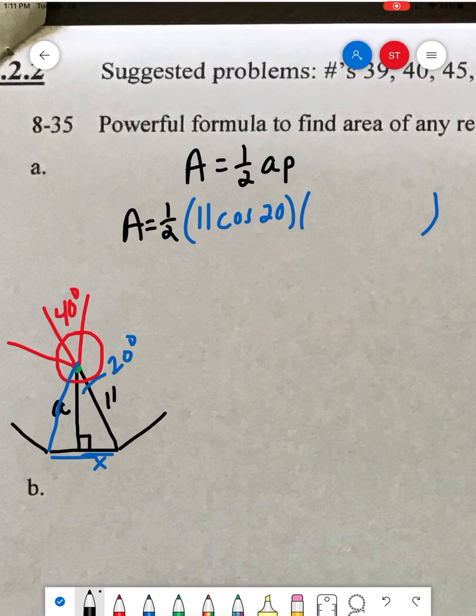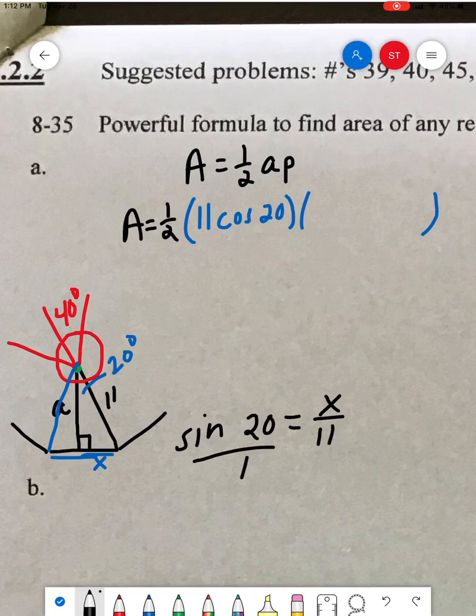So let's try and find the value of x so we can double it. Well if your finger's on 20, that x is the opposite, 11 is hypotenuse. So that's sine. So the sine of 20 is equal to x/11. You with me? Cross multiply, x is equal to 11 sine 20.